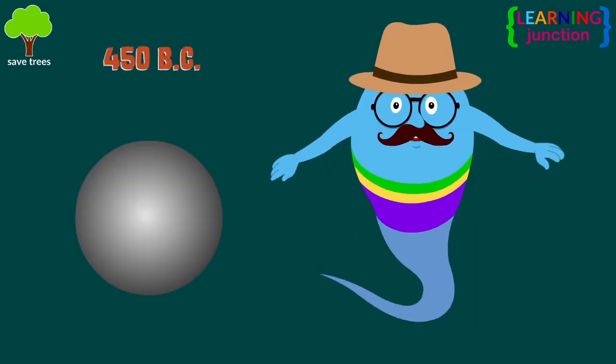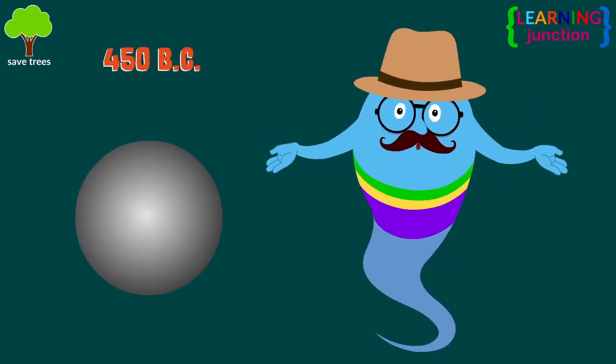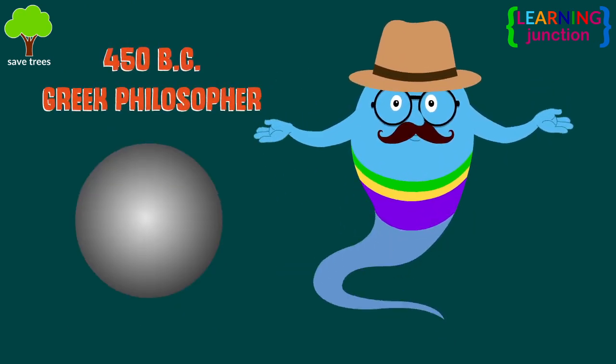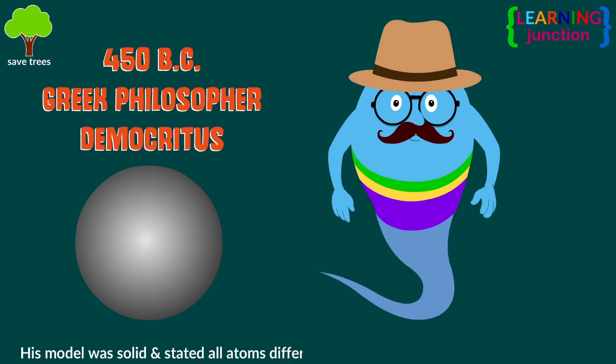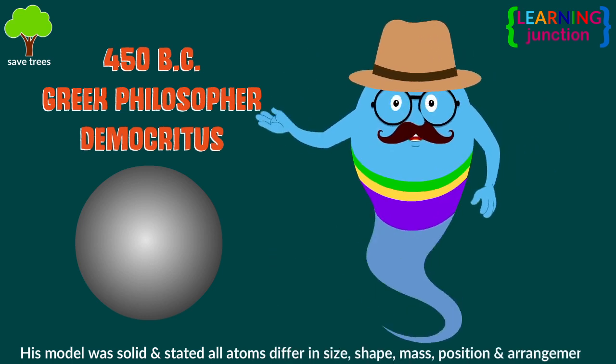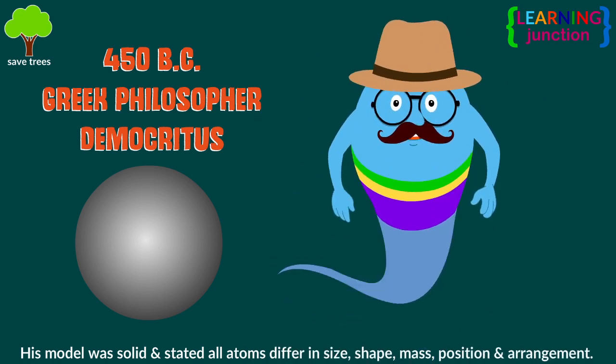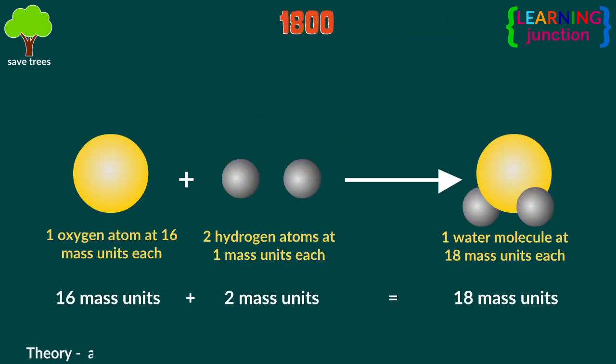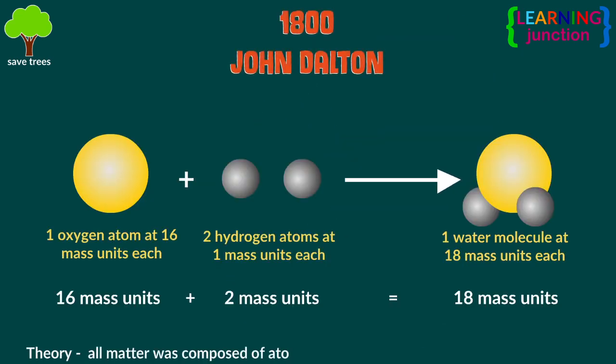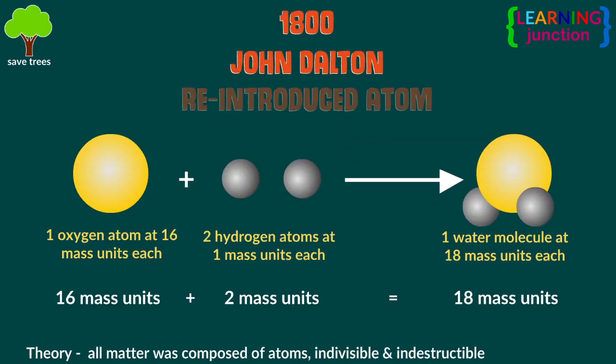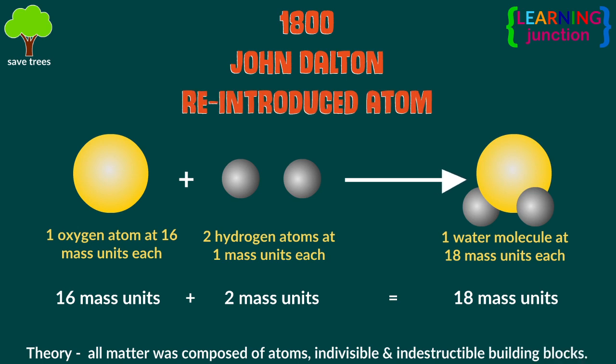Around 450 BC, Greek philosopher Democritus introduced the concept of the atom. In 1800, John Dalton reintroduced the atom.